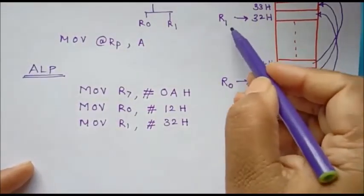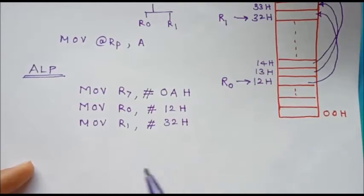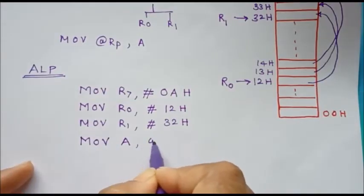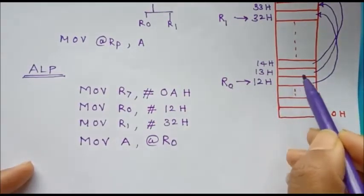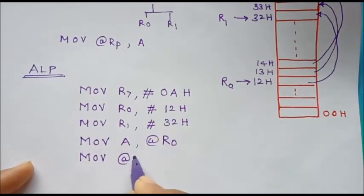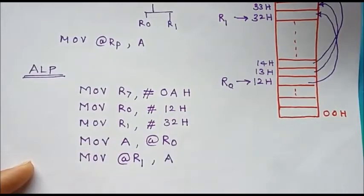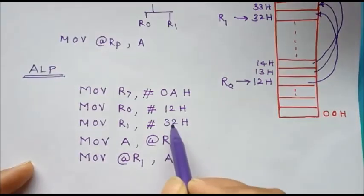We are using R0 and R1 as pointers to memory, so we store the respective addresses in these registers. To read data from the source memory location, we use the instruction MOV A, @R0. Initially R0 points to 12H, so it reads data from address 12H and stores it in the accumulator. Then we use MOV @R1, A to store the accumulator contents at the memory location whose address is in R1, which is 32H. This completes the transfer for the first byte.